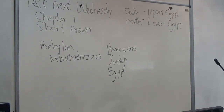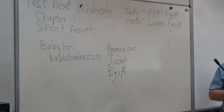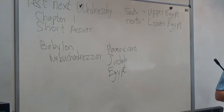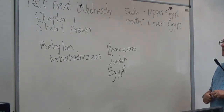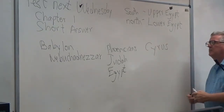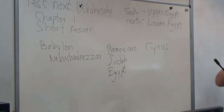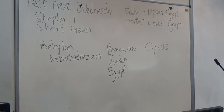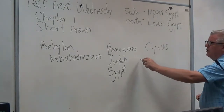Nebuchadnezzar died, and within about 17 years a series of kings — none of whom were really great — ruled. Finally, King Cyrus of Persia conquered Babylon and Babylon's hegemony came to an end. This brings us up to the Medo-Persian Empire.